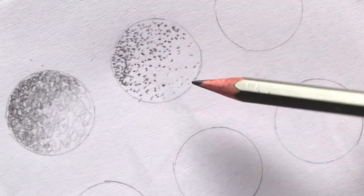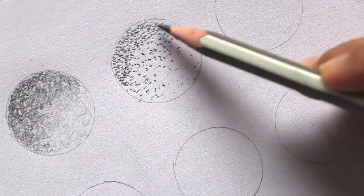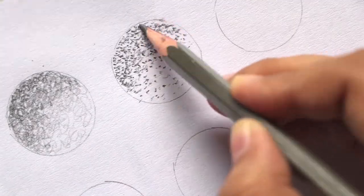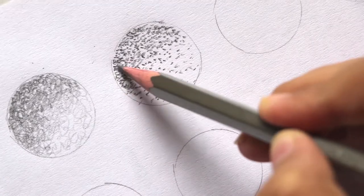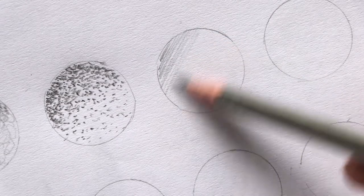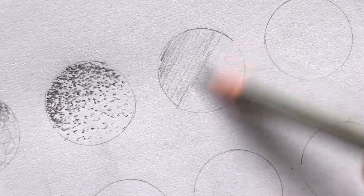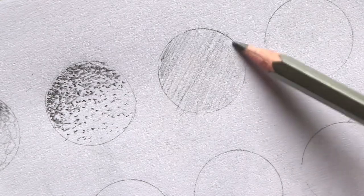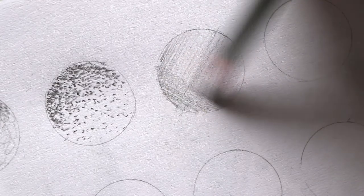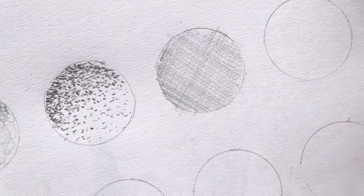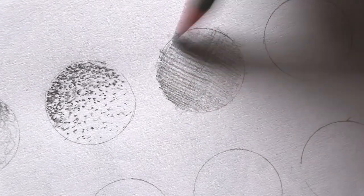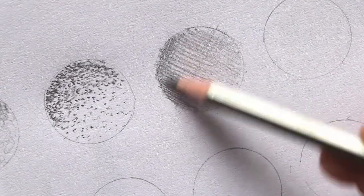Now let's watch it. In this technique we have to use slant lines in two opposite directions, we actually have to make a checks kind of design. It is very easy and it gives a very good look.